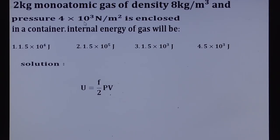The next one is volume. So what is volume? Mass by density. What is the mass here? 2 kg mass, density is 8, therefore V will be 2 by 8. F equal to 3, P is equal to 4 into 10 cube, and V is equal to 2 by 8.